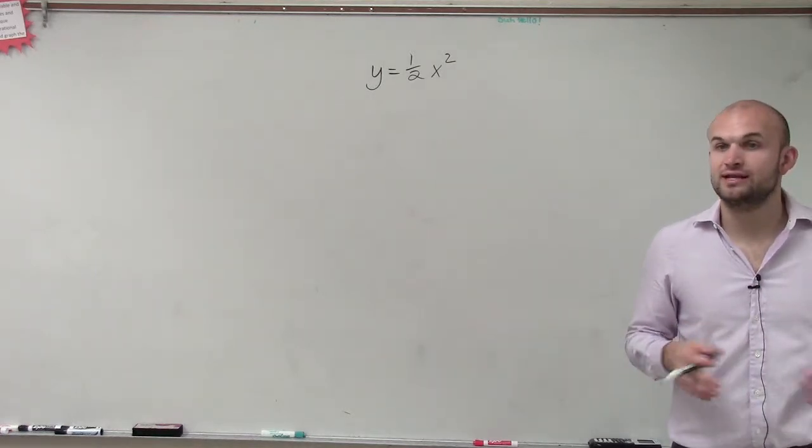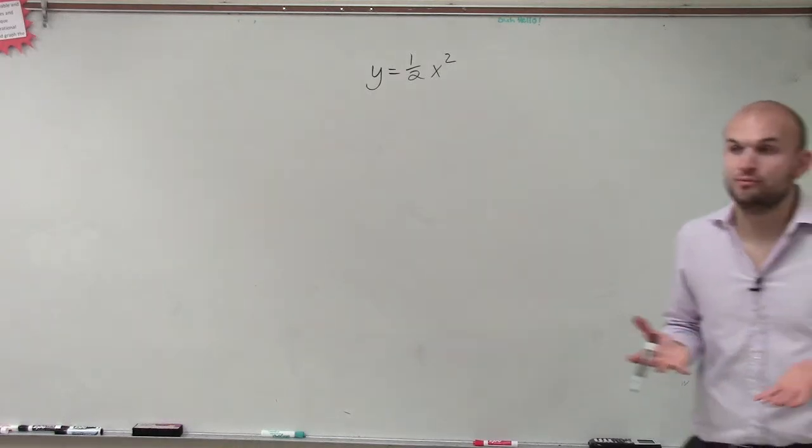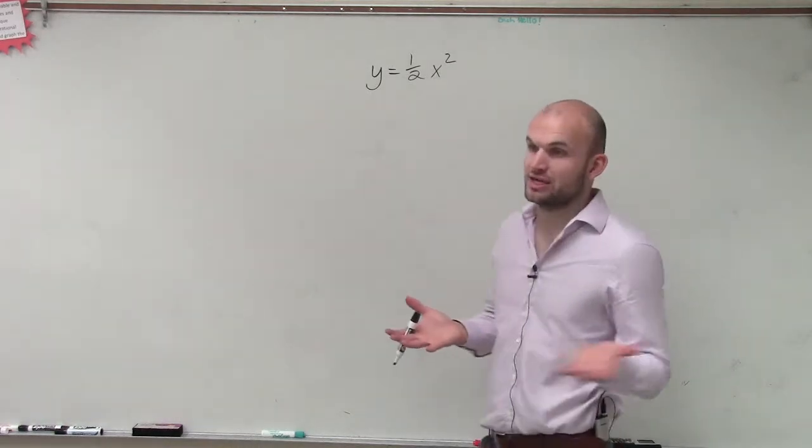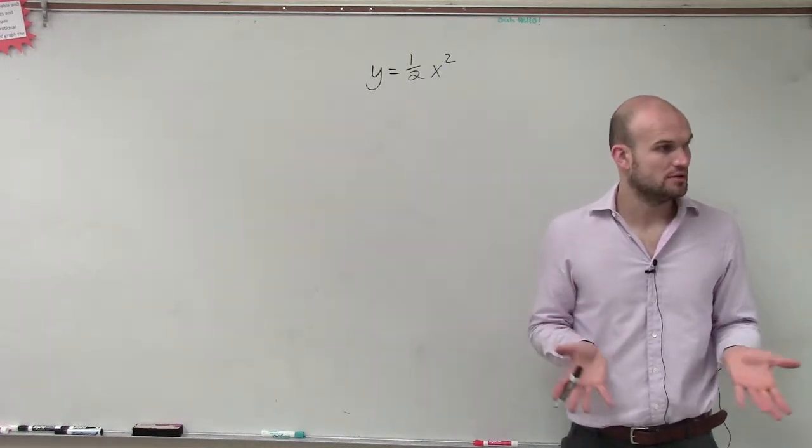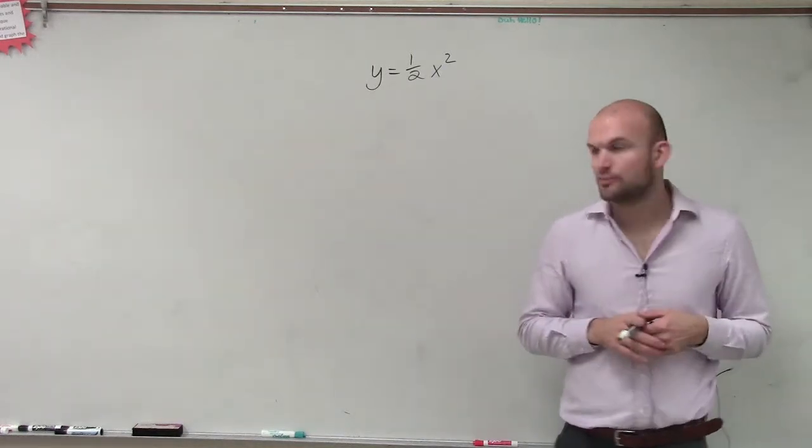So the way to determine that is going to be looking at what is being squared. Obviously, we're familiar with x squared, right? x squared is going to tell us that the graph is going to open up or down. That's how we're familiar with the parabola.